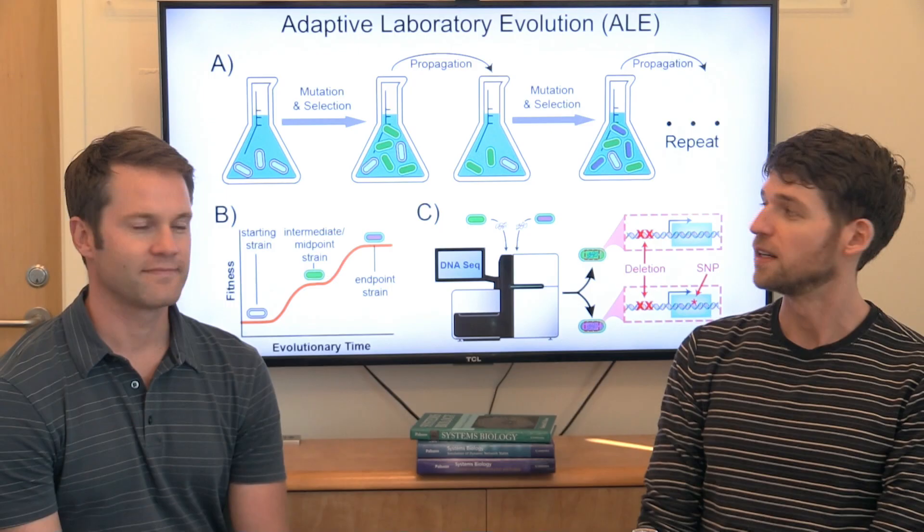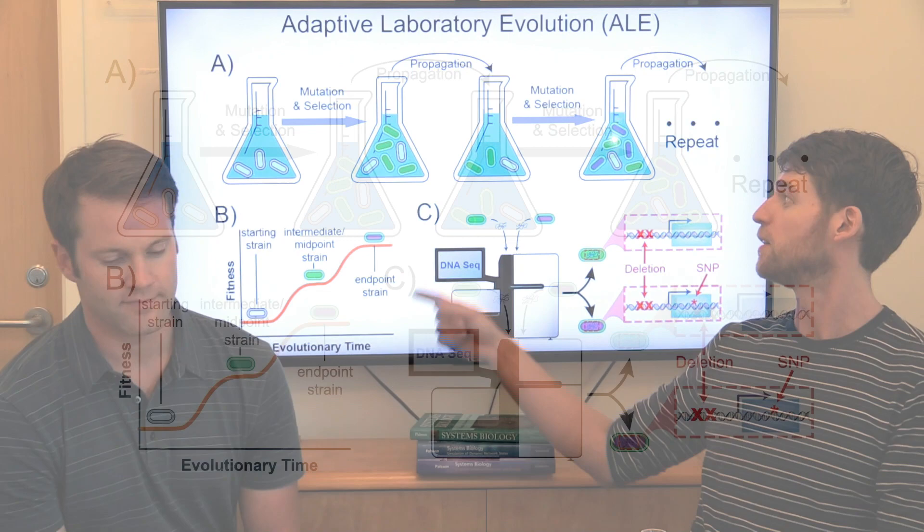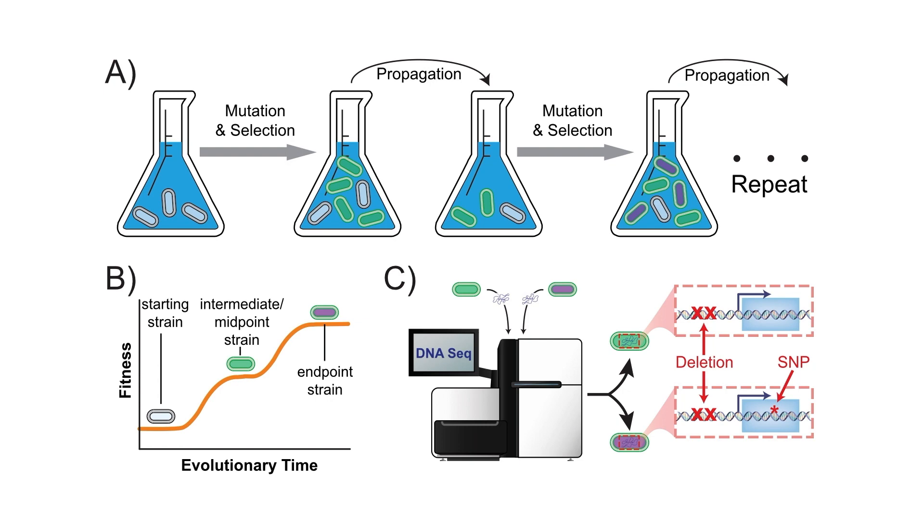Yeah so this is just a little summary of the ALE process where you have these tubes of growth and as the bacteria are growing you get mutants that arise indicated by different colored little cylinders here and then you just keep that process going. You keep serially passing the culture. There are some different ways of performing ALE. You can have chemostat where you're just continuously kept in the same flask but this is a good schematic